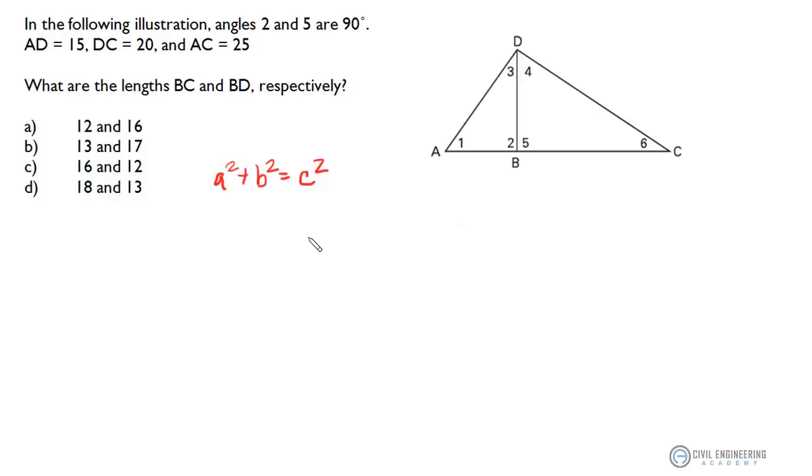I think to get at this we need to define each of these triangles in terms of the Pythagorean theorem and see what we can do here. So let's write some equations that describe these two triangles and see what happens. To start out, let's define triangle ABD first. For that one I'm gonna say side AB squared plus BD squared is going to equal 15 squared.